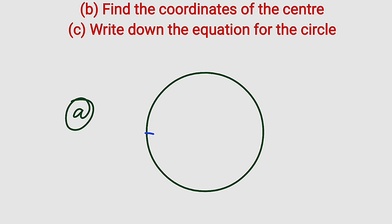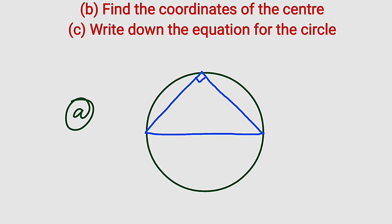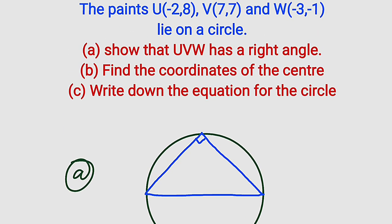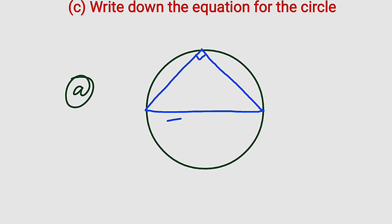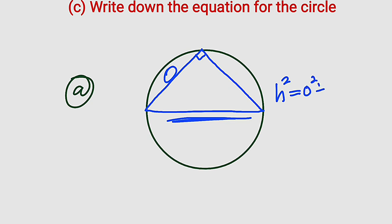So if we have a diameter here, which is a line that divides the circle into two equal parts, if you sustain an angle to the circumference from end to end of the diameter, you definitely have to form 90 degrees. But how can we testify whether UVW has a right angle? We can apply Pythagoras' rule, which states that the length of the hypotenuse squared equals the sum of the squares of the two other sides: opposite squared plus adjacent squared. This is the only way we can test whether that triangle has a right angle.